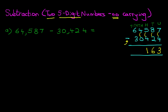The thousands column? 6-3. 6-3 is 3. And that is our answer: 34,163.